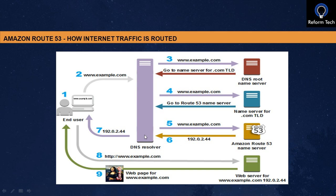The next time you hit the domain, you get the IP address directly from the DNS resolver without following all those steps. Now that the domain name has been translated to the IP address, the resolver tells you which web server to reach. The end user is then routed to that specific web server — the example.com web server tagged to IP address 192.0.2.44 — and it fetches and returns the web page. This is the process that happens behind the scenes every time you hit any domain, even something like www.google.com.